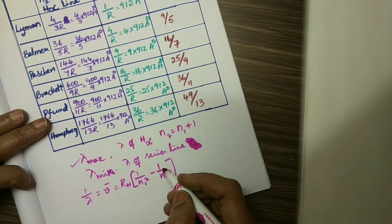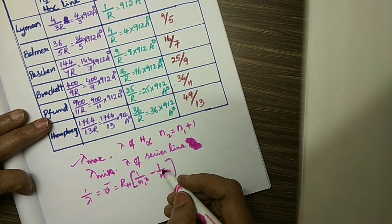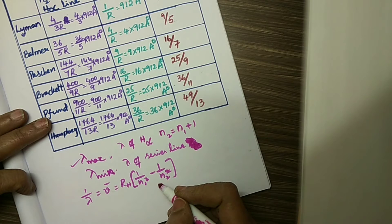Students, let us calculate the ratio of lambda max to lambda minimum for different series of lines.